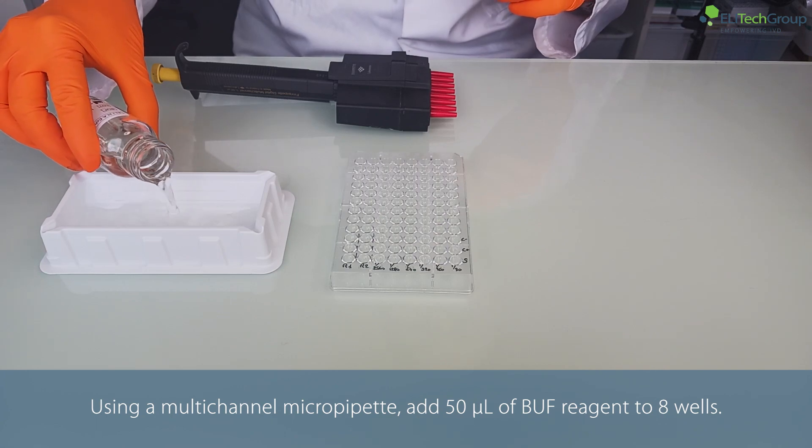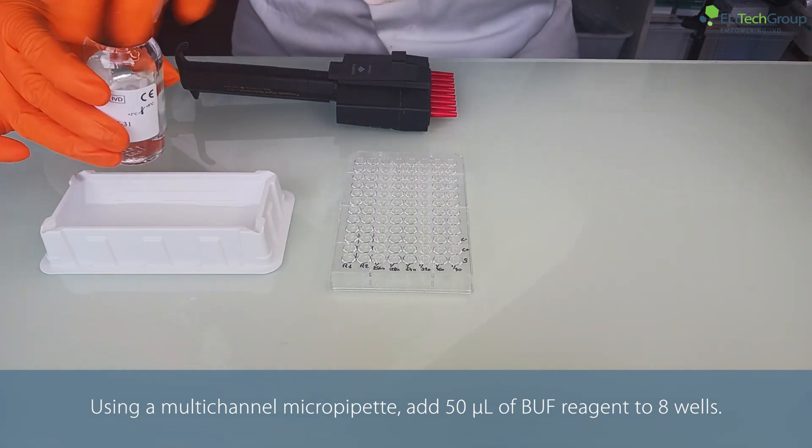Using a multi-channel micropipette, add 50 microliters of buff reagent to eight wells.